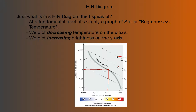They either worked on this together or came up with it independently — you could Google that if you're interested. But it's a very interesting graph, and at its most fundamental level, very basically, it's just brightness versus temperature. So on the y-axis you've got brightness — another word for brightness is luminosity. And on the x-axis you've got temperature.